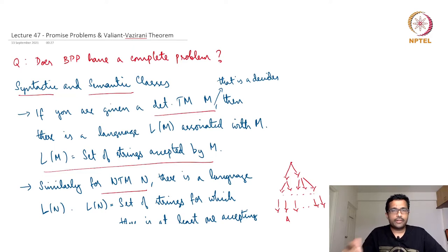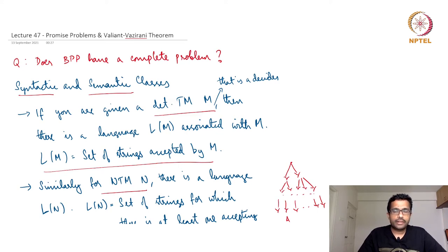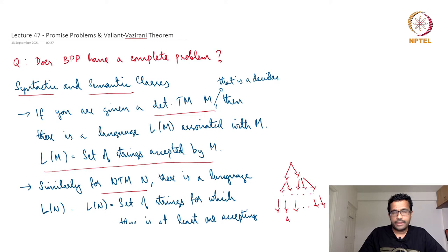Hello and welcome to lecture 47 of the course Computational Complexity. In this lecture and the next we will see what are called promise problems. Promise problems are a generalization of languages, and for a specific promise problem called Unique SAT, we will see its complexity.